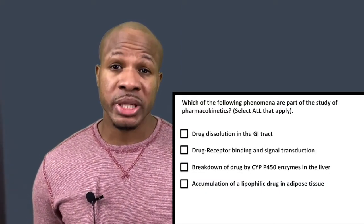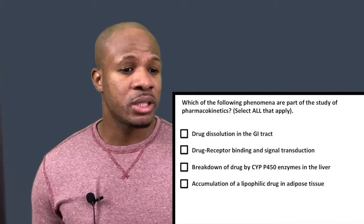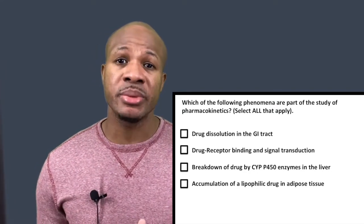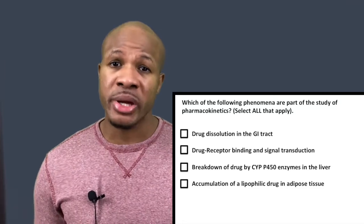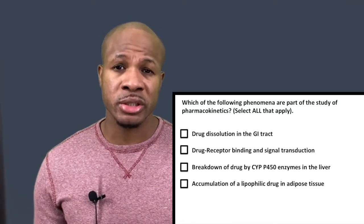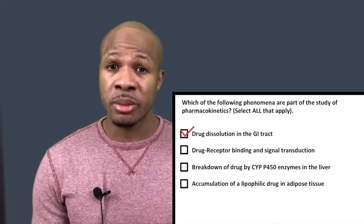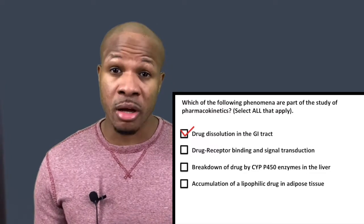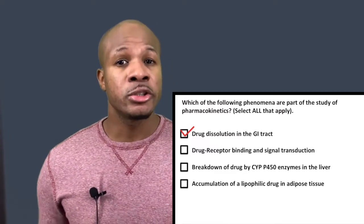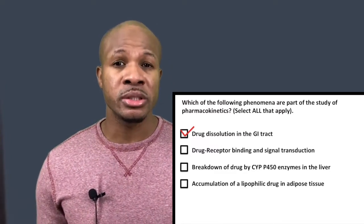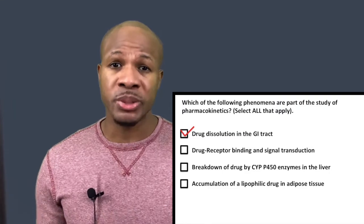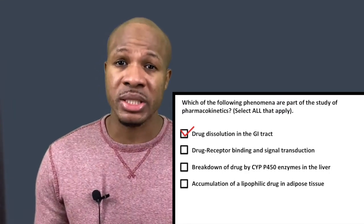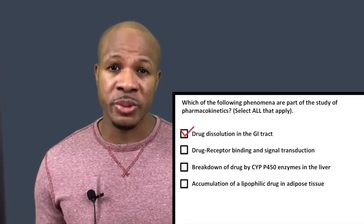Answer choice A says: drug dissolution in the GI tract. That's going to be part of drug absorption. In order for the drug to be absorbed from the GI tract into the bloodstream, the drug first has to dissolve in the GI tract. So drug dissolution is going to be part of the absorption process, and this would definitely be a pharmacokinetic process. So A would be correct.